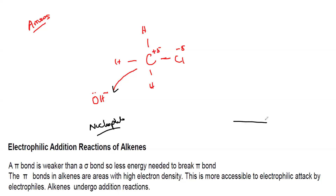The direction of the arrow is always from the electron-rich to the electron-deficient side.